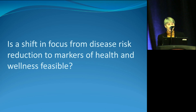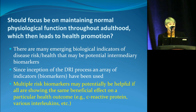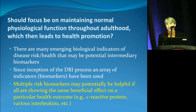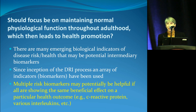So the question is: should we focus on disease risk reduction? Are markers of health and wellness feasible? Do we want to look at maintaining normal physiological function throughout adulthood that would lead to health promotion? There are a lot of emerging biological indicators of disease risk and health promotion, but they're going to be in an intermediary pathway. Since the DRI process, a variety of biomarkers have been used, and as science has advanced, our knowledge and methodological analysis have improved. Or do we want to look at multiple risk biomarkers all showing a benefit on a particular health outcome — especially related to coronary heart disease?